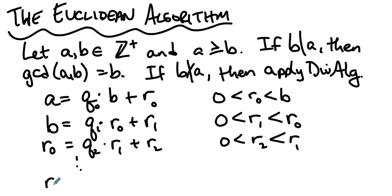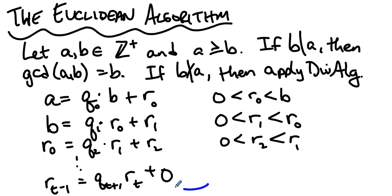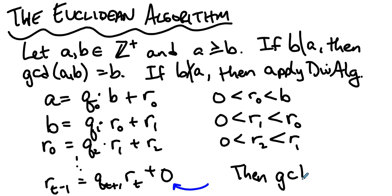Eventually you get to a point where there is no remainder. Why must we reach a point of no remainder? Because the remainders keep getting smaller, and since we don't have infinitely many steps — even if the starting value is 25,973, in no more than 25,973 steps there must be a zero remainder. When this happens, the greatest common divisor of a and b is this last remainder, r-sub-t.